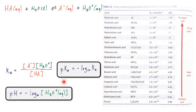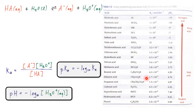On the other hand, ethanoic acid has a Ka value of 10⁻⁵ — a number much smaller than 1 — meaning the equilibrium is more on the reactant side. The acid is mostly undissociated, and very few acid molecules have generated hydronium ions and conjugate base. The pKa value, which is the negative logarithm of Ka, is 4.7 for ethanoic acid and minus 7 for hydrochloric acid.